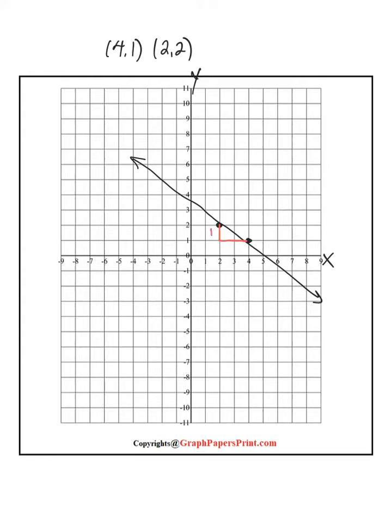If you notice, I have one here and I have two here. So I have a run of two, a rise of one. So my slope is negative one-half.